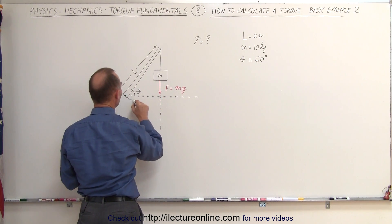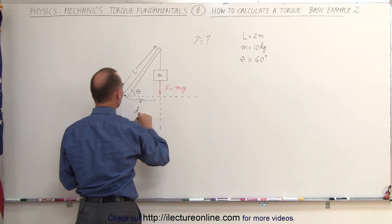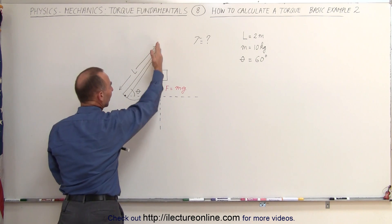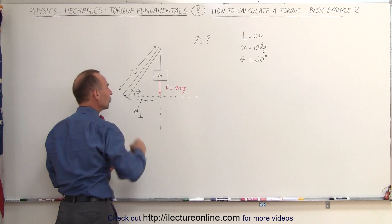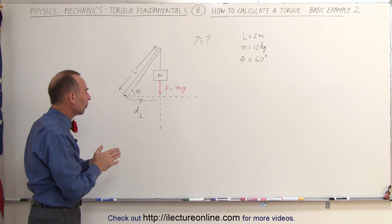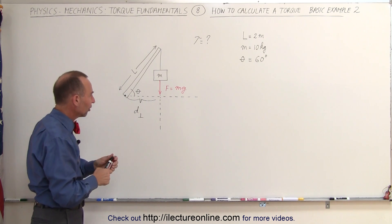Which means that this here can be considered to be the perpendicular distance from the line of action of the force to the pivot point, the point of which the whole thing would be rotating. That means that the second method we learned might be the easiest way to approach this.